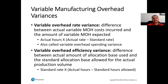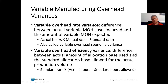We can also look at the variable overhead efficiency variance, and that's the difference between the actual amount of the allocation base used and the standard allocation base allowed for the actual production volume. This is going to be the standard rate multiplied by the actual hours minus the standard hours. In this case the allocation base is hours — it may not always be, but the homework problems are likely going to be that way.